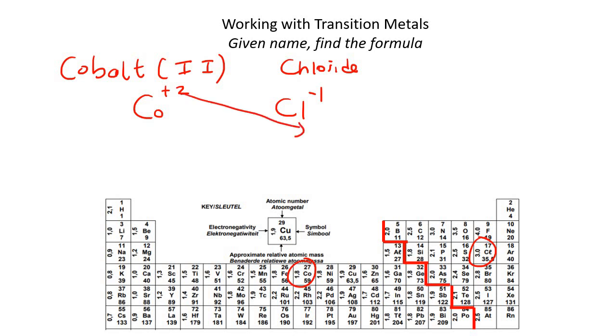So now you put the 2 over here, and you put the 1 over there. And so you end up with Co1, Cl2. But when there's a 1, you don't have to put anything, so you actually just end up with CoCl2.